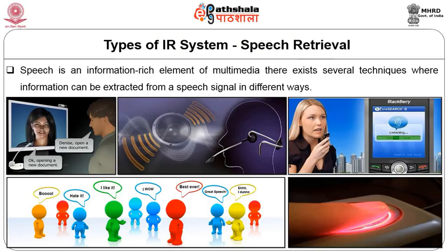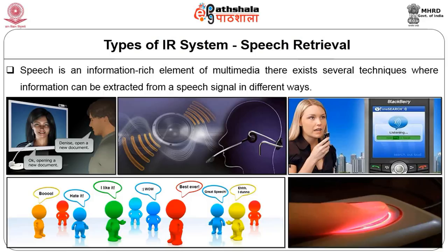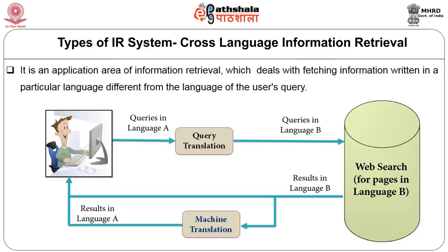Cross-language information retrieval is an application area of IR that deals with fetching information written in a particular language different from the language of the user's query. For example, using Hindi queries to retrieve English documents. This is one of the challenging fields. Suppose a person does not know English; they can type using Hindi and the system is supposed to search and retrieve documents. This is an area of ongoing research known as CLIR — cross-language information retrieval.